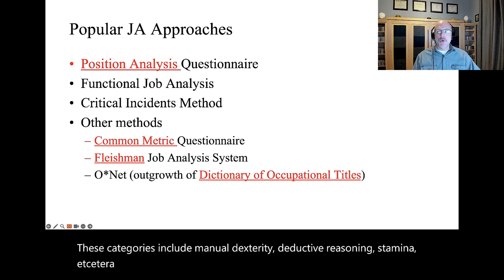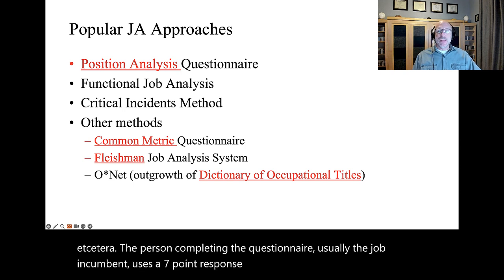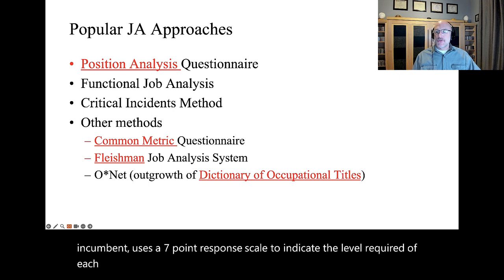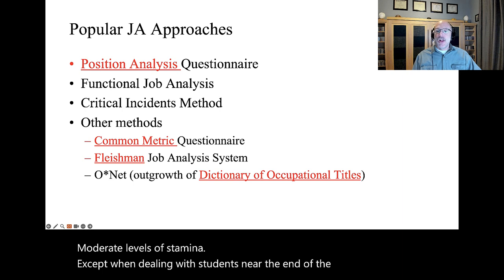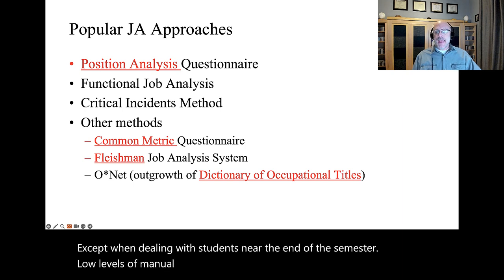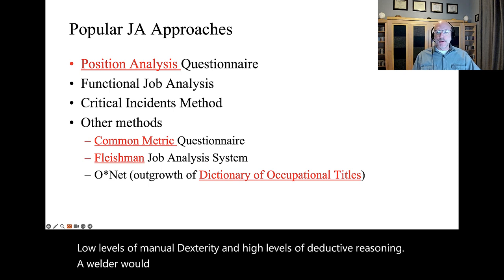The Fleishman Job Analysis System is a worker-focused instrument that asks about 52 different abilities needed to perform just about any job. These categories include manual dexterity, deductive reasoning, stamina, etc. The person completing the questionnaire, usually the job incumbent, uses a seven-point response scale to indicate the level required of each ability. For example, the job of a college professor would require moderate levels of stamina, except when dealing with students near the end of the semester, low levels of manual dexterity, and high levels of deductive reasoning. A welder would require different levels of these abilities.